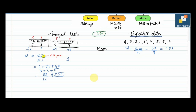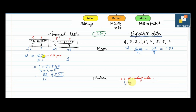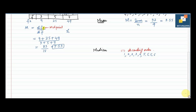After mean, the next thing is median. Median is the middle value. Whenever finding the median of ungrouped data, the first and very important step is to arrange your data in ascending order. So arranging: 1, 2, 2, 3, 3, 4, 4, 5. The working formula for median is (n+1)/2.